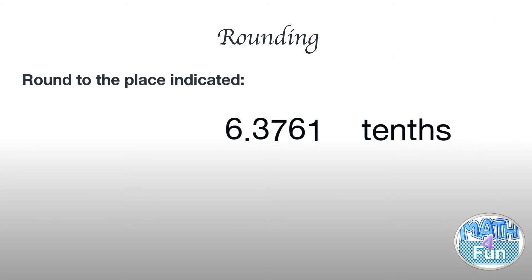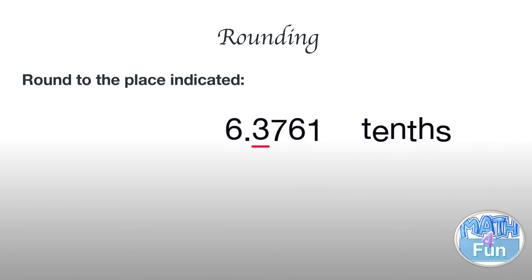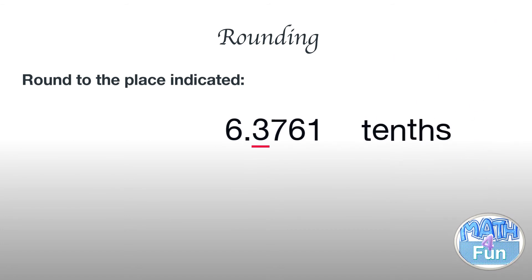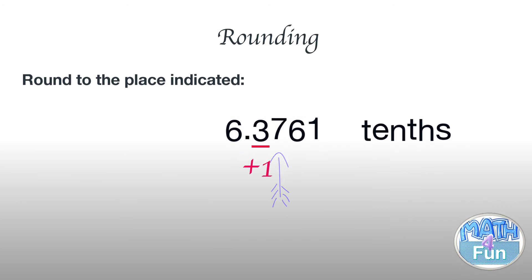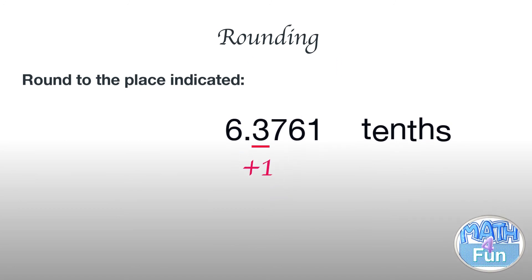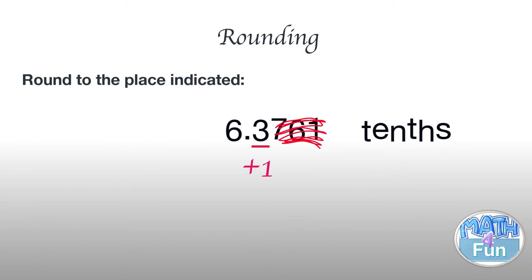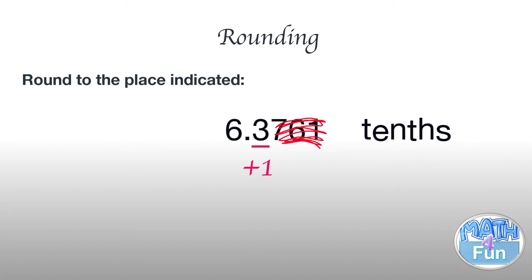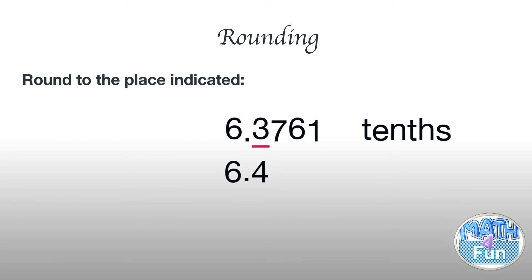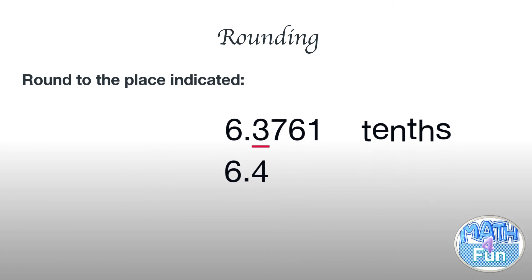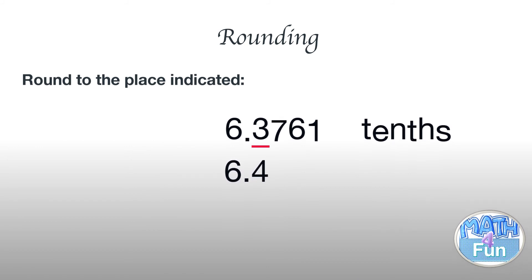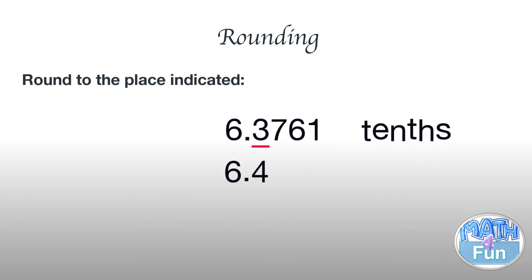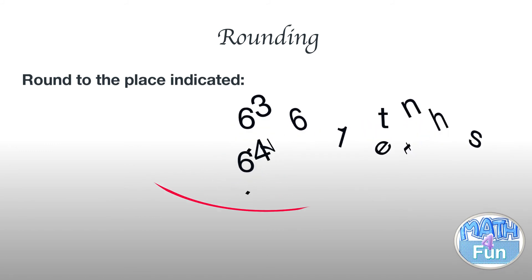Here we have 6.3761 and we want to round to the nearest tenth. The tenths place is 3. We look to the right of 3 and we have 7, which is more than 5. So we add 1 to the 3 and change 7, 6, and 1 to zeros. The number becomes 6.4000, or simply 6.4.